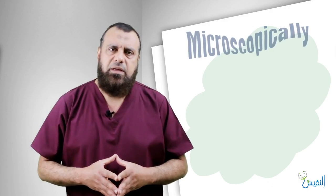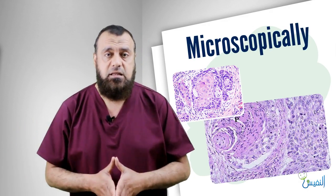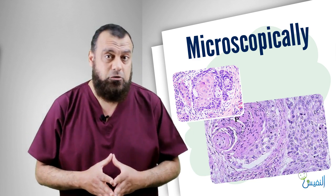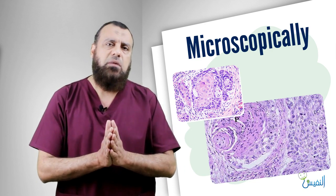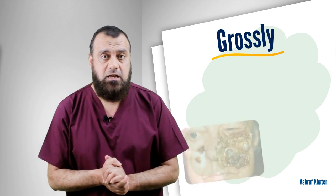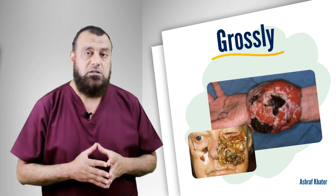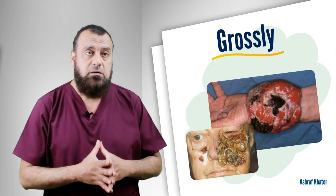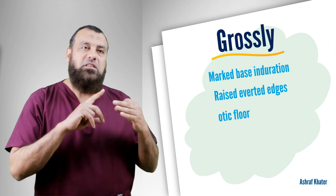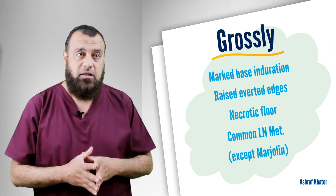What about the microscopic examination? Squamous cell carcinoma is characterized by the presence of central keratin and what we call cell nests in classic malignant acidophilic cells. What about the gross picture? There are many examples of the squamous cell carcinoma ulcer. It is a classic ulcer with an indurated base, raised everted edges, a necrotic floor, and lymph nodes that may be positive or negative.